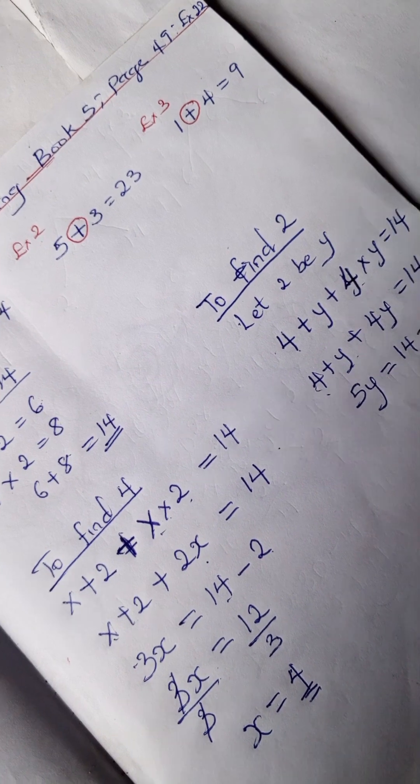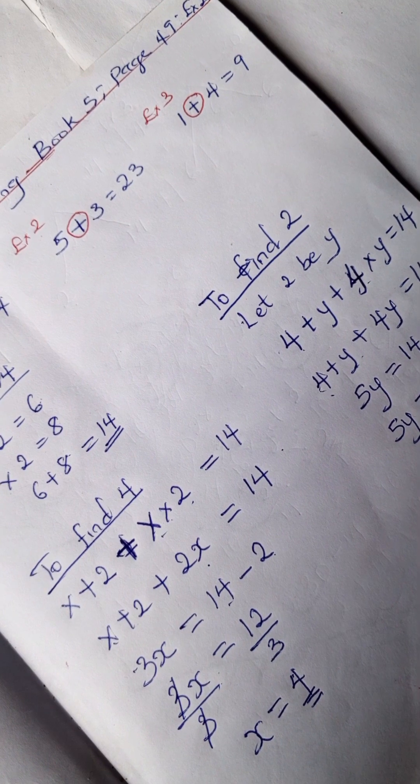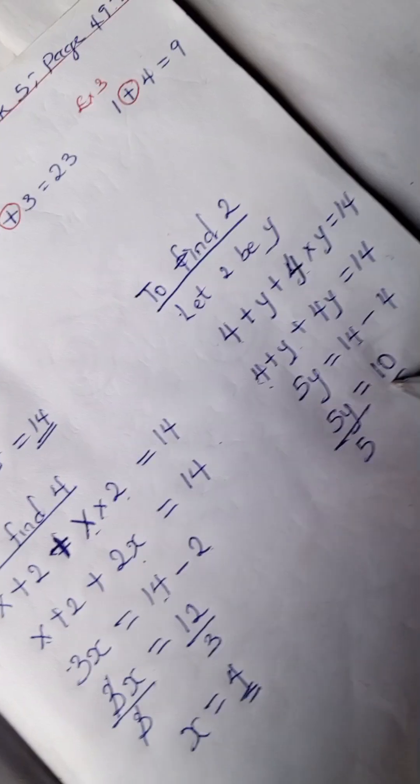We're going to divide both sides by 5. The 5s cancel out, so we have y equals 10 divided by 5, which is 2.